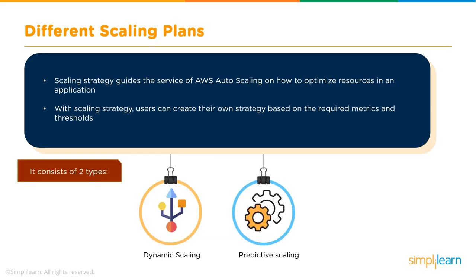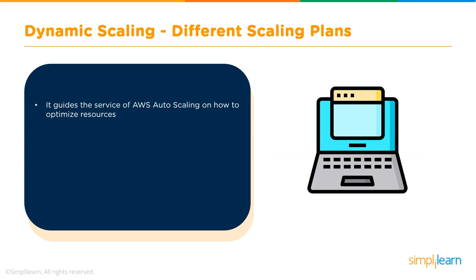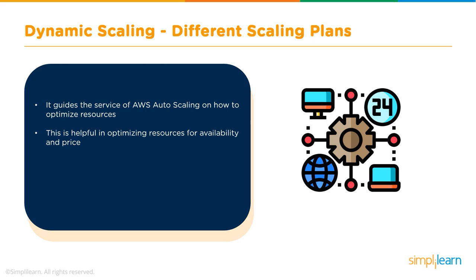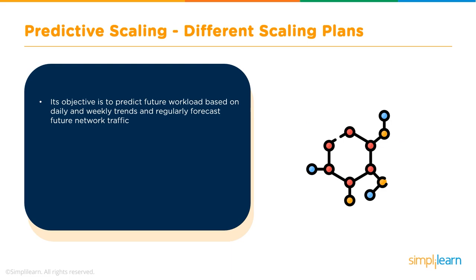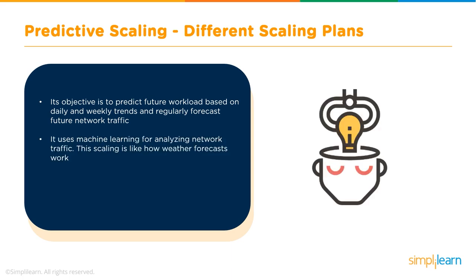There are two types of scaling policies: dynamic scaling and predictive scaling. Dynamic scaling guides AWS autoscaling to optimize resources for availability and cost, using user-defined metrics and thresholds such as network in/out, CPU utilization, or memory utilization. Predictive scaling forecasts future workload based on daily and weekly trends using machine learning to analyze network traffic — similar to how weather forecasting works.